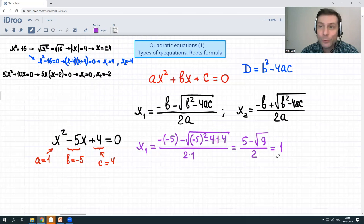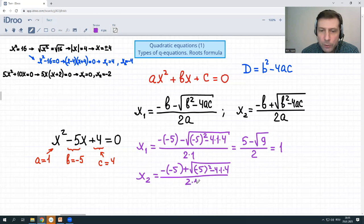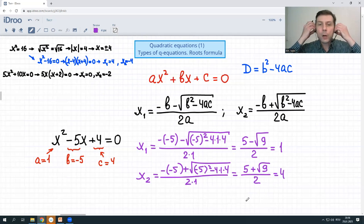And x sub 2 would be same negative negative 5 first but then plus this root again I'll write everything minus 5 squared minus 4 times 1 times 4 divided by 2 1 2 times 1 sorry then we'll get again 5 plus root of 9 which is 5 plus 3 over 2 which is 8 over 2 and its 4.